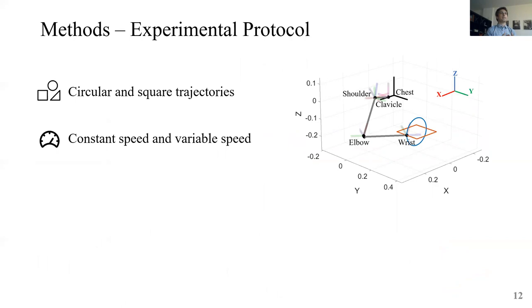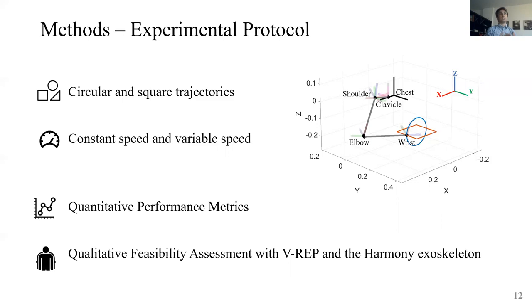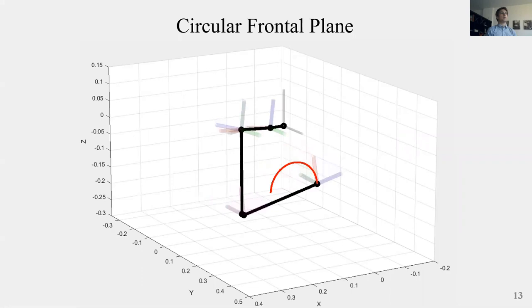After presenting these algorithms, we tested them with circular trajectories, squared trajectories, and these trajectories were performed on different planes at constant speed and at variable speeds. Then we computed some performance metrics to validate them. And as a qualitative result, we also tested the methods with complex planar and 3D trajectories that were fed to a VREP simulator and the Harmony exoskeleton. So this, for example, is a circular frontal trajectory that we computed with the new proposed method.